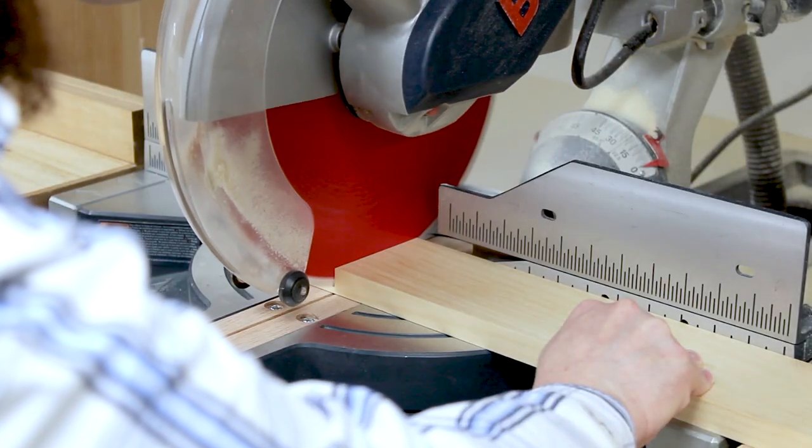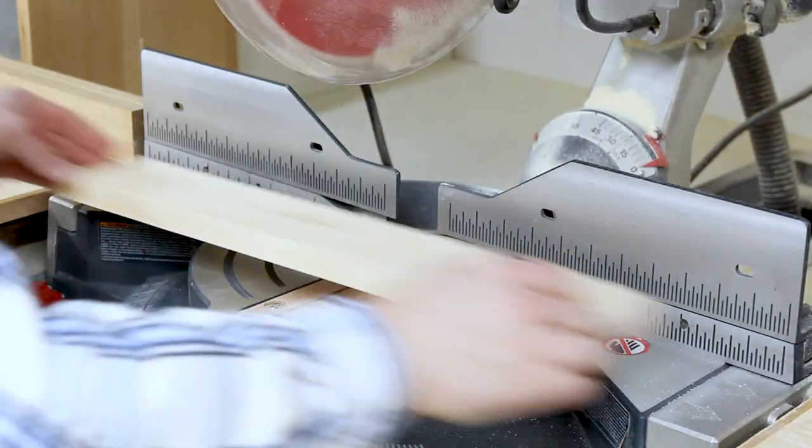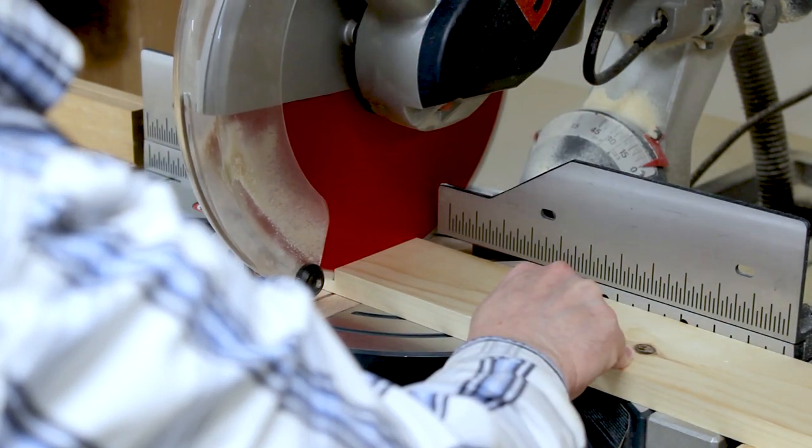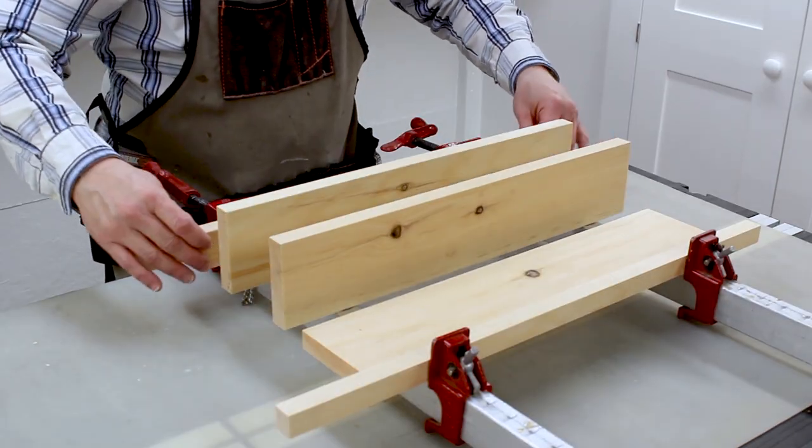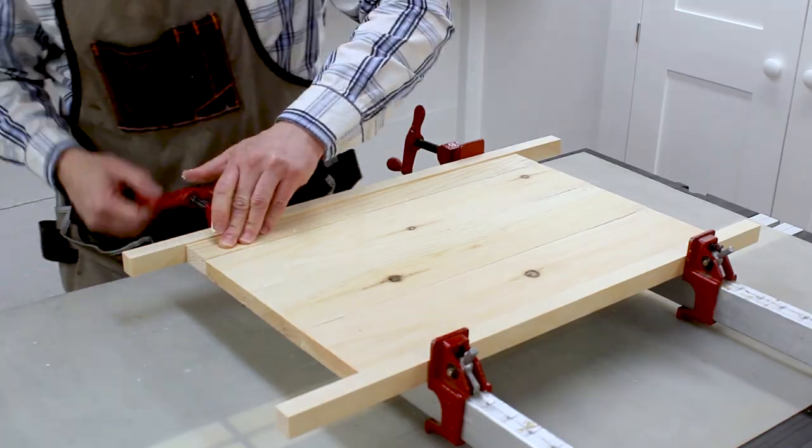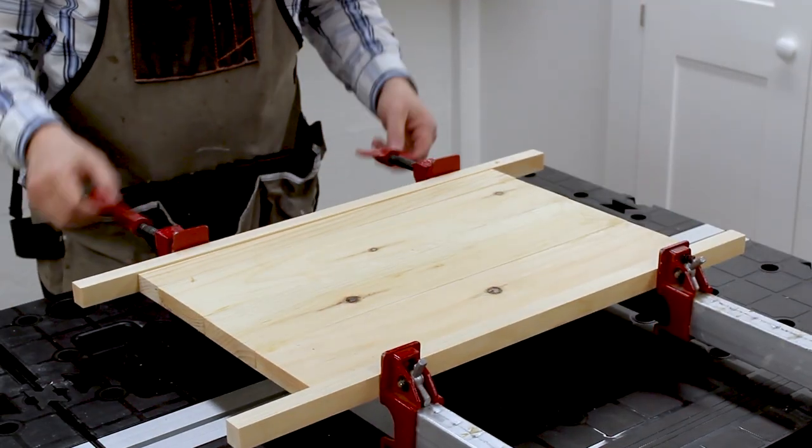Now it's time to cut the parts for the shelf. The final dimension of the shelf is 18 and 3 eighths inches wide, but I'm going to cut these parts to 18 and a half so I can square up the ends of the shelf later. I applied a little glue and clamped the shelf. I removed the clamps when the glue was dry and set the shelf aside.